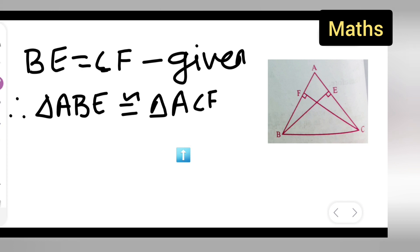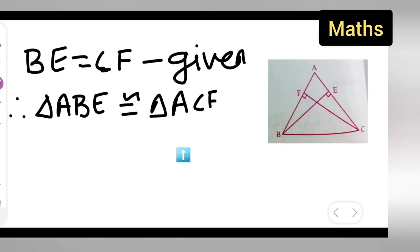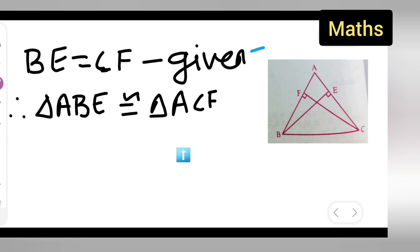Now let us see which rule it is. So here we have applied angle AS. Wait, both are angles, right? Here also it is angle, so here both angle angle, and here it is side. So which rule is it? Basically angle angle side rule.